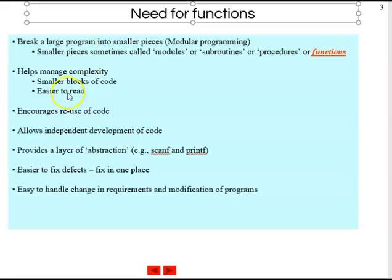Let us look at how functions help. Functions help by breaking a larger program into smaller pieces called modules, subroutines, procedures, or functions — all these are the same. They manage complexity and make programs much easier to read. They enable reuse of code, so instead of repeating the calculation of average 4 times, we can reuse the code. Someone could develop the function which calculates the average while someone else develops the main program, allowing independent development. For example, in an Angry Birds application, one person can focus on graphics, one on physics, and one on the game itself.